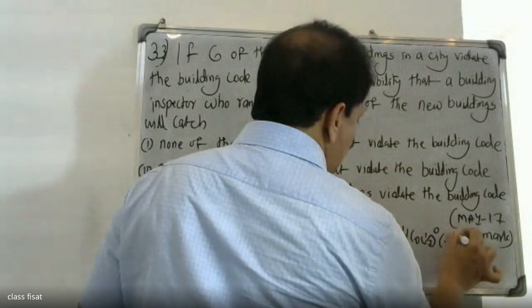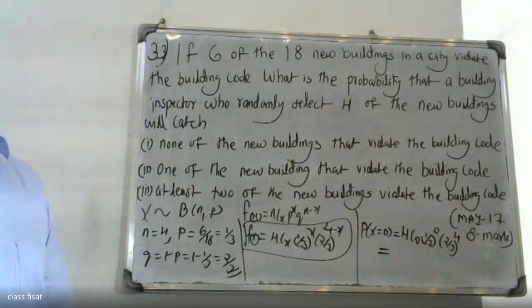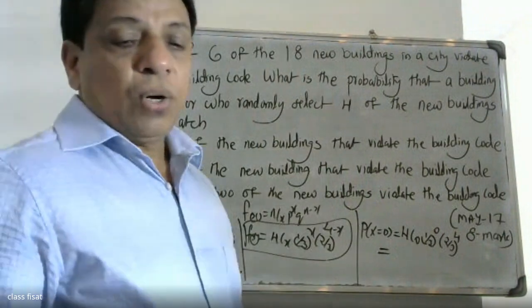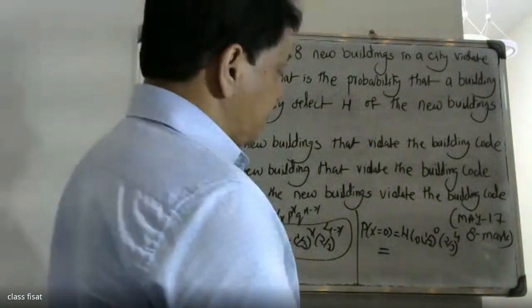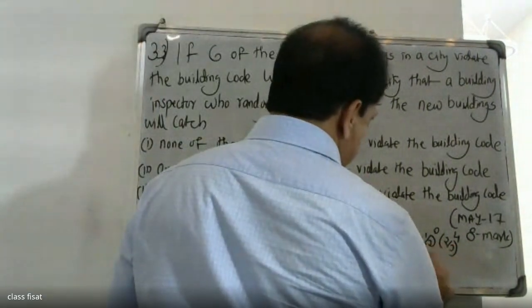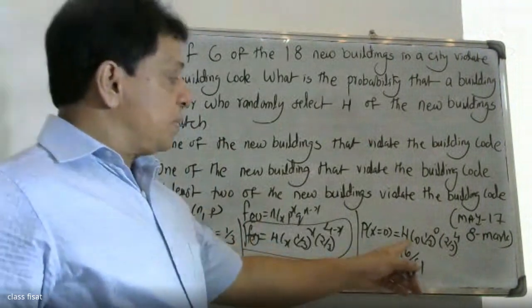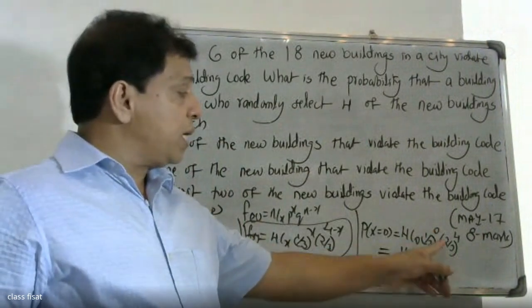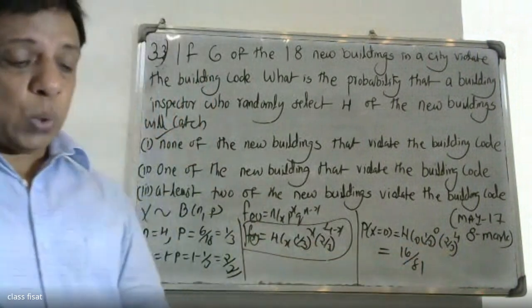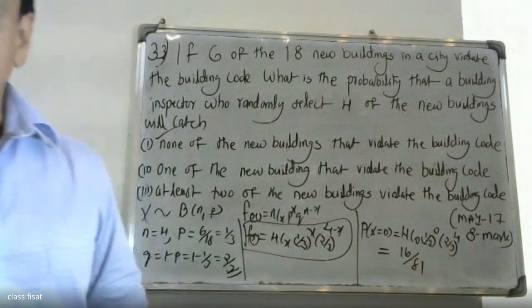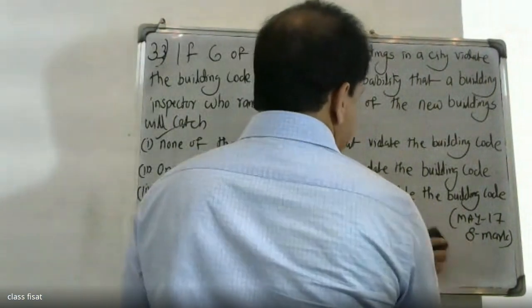Calculating the value: 4C0 times (1/3)^0 times (2/3)^4 gives us 16/81. So the probability that none of the selected buildings violate the building code is 16/81.